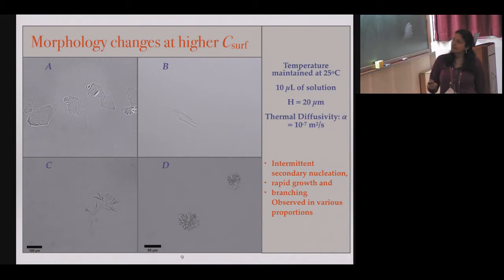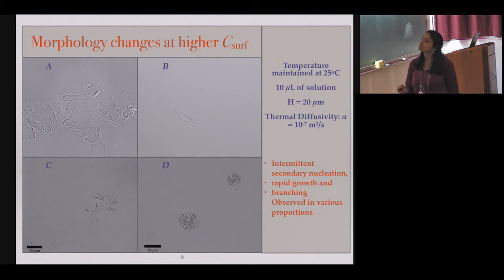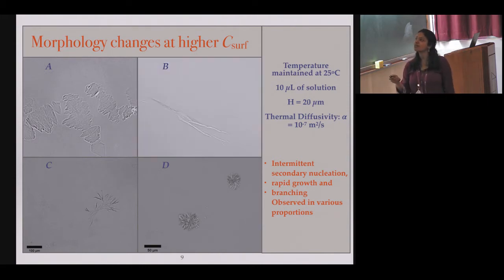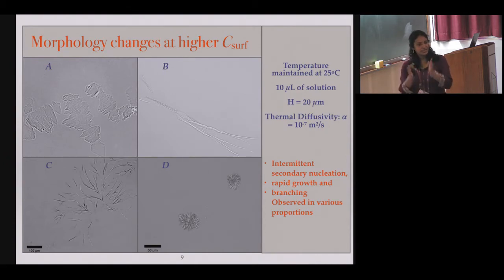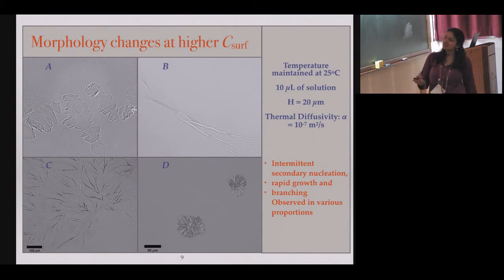In this video you can see there is some remnant of the rhombic platelet, but then there are side projections growing from the edges. If we increase the additive concentration further, the rhombic plate almost stops growing immediately after forming and you get these long tentacles. Increase it further and you see a tree-like fractal growing, and even further you get this spherulitic-like growth.